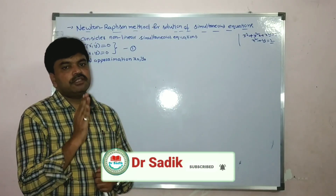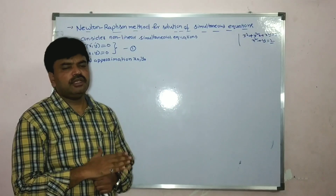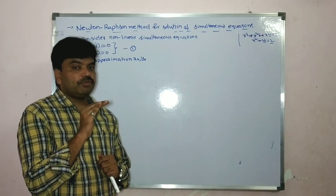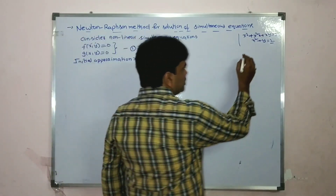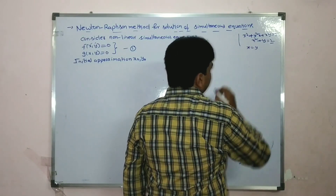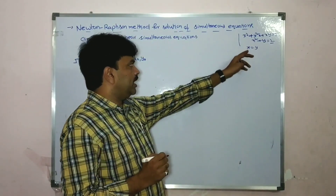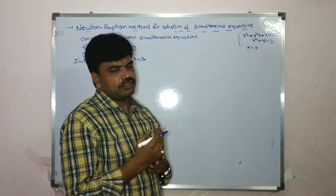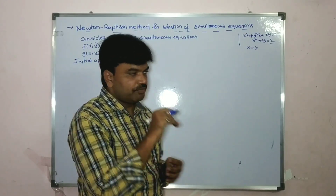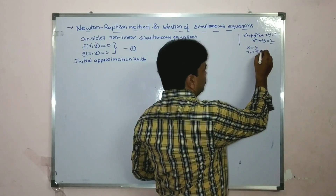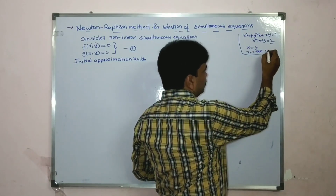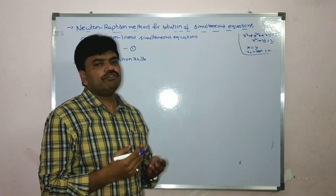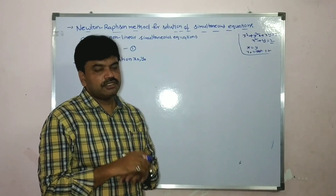If not mentioned in the problem, the process is: take x is equal to y, and substitute either in equation 1 or 2. Then you get x or y value. Suppose you get 1.2, then x0 and y0 are both equal to 1.2. Or 1.5 — whatever value you get, that is the initial approximation.